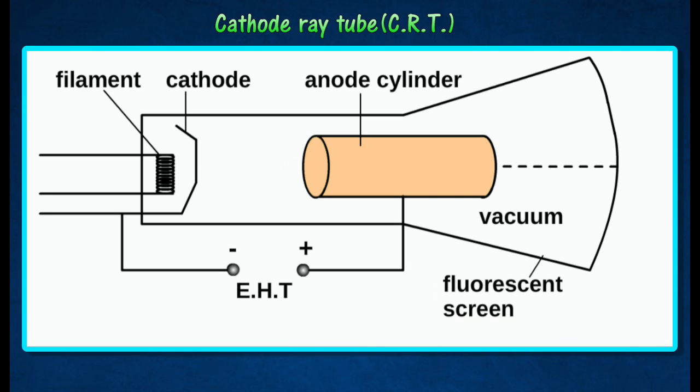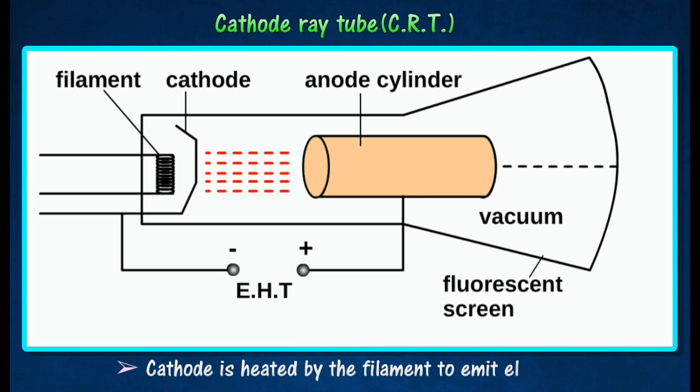The electron gun is made up of a cathode and anode arranged linearly in a vacuum tube. The cathode is heated by the filament to emit electrons.